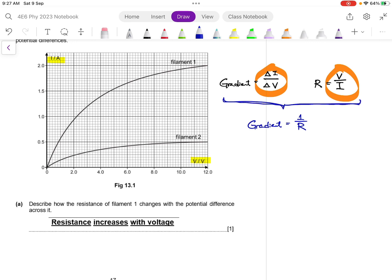So if you look at, for example, if I want to investigate how the resistance of filament 1 changes, you can just pick any two random points. This is when V is low, compare it with another point that is further down, which gives you a higher V.